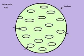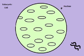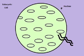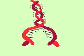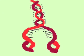Within the eukaryotic cell, whenever a protein is needed, a special message is sent to the nucleus to trigger the replication of DNA. The nucleus quickly gets to work. DNA strands are quickly replicated and then sent out as RNA strands individually to the ribosome.